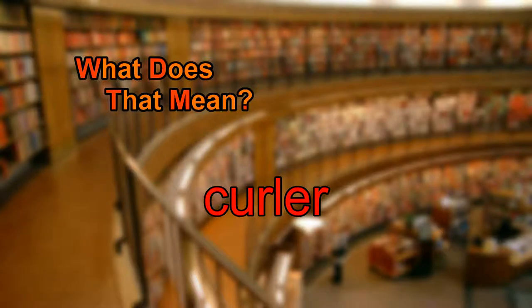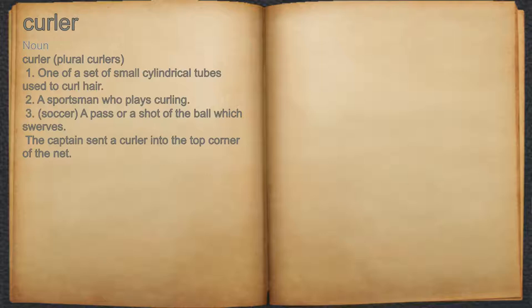What does curler mean? Curler. Noun. 1. One of a set of small cylindrical tubes used to curl hair. 2. A sportsman who plays curling.